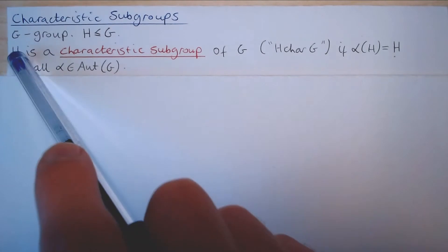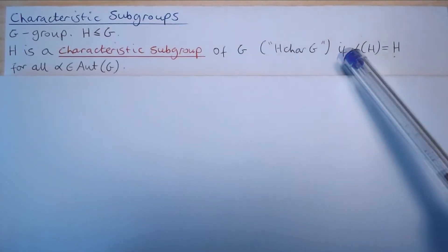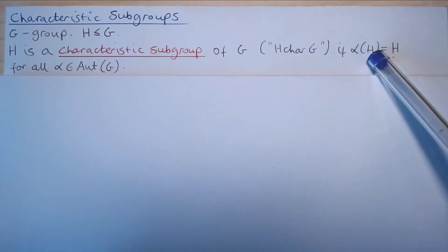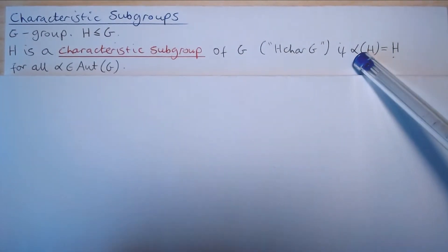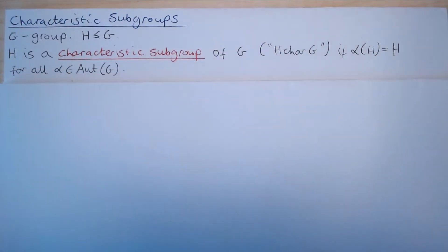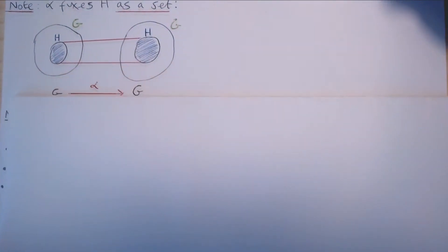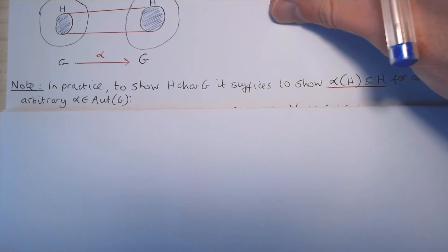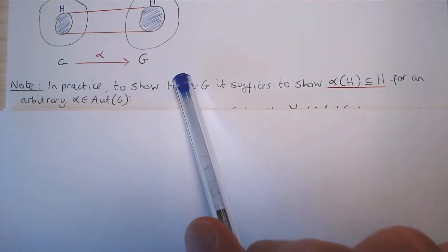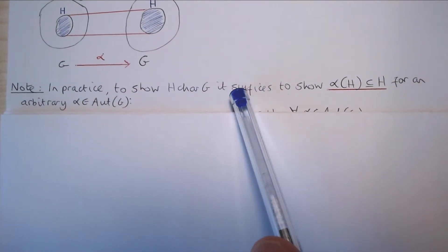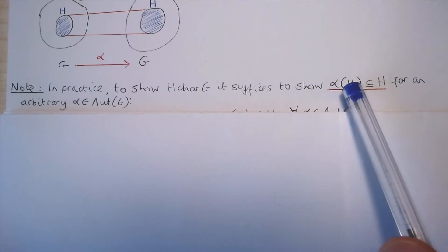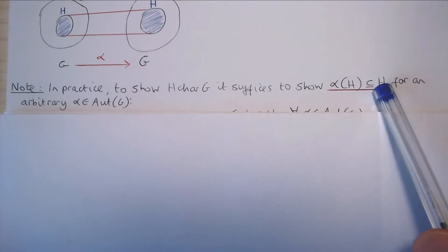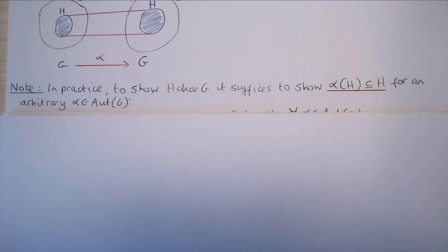Recall that H is a characteristic subgroup of G if H is fixed by all of the automorphisms of G. Recall from part 1 that in practice, to show H is characteristic in G, it suffices to show that α(H) is contained in H for an arbitrary automorphism α. We will use this fact to establish that the Frattini subgroup of G is characteristic in G.